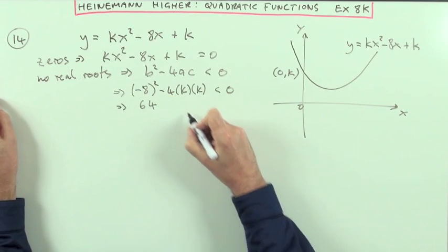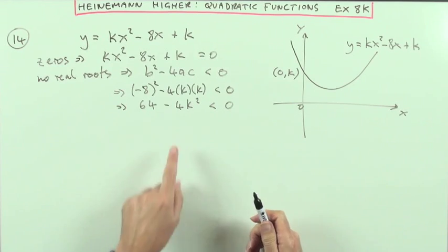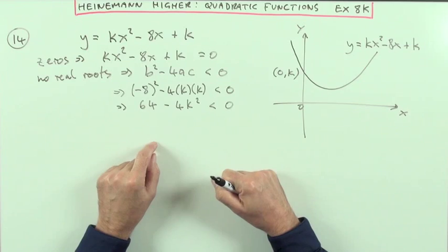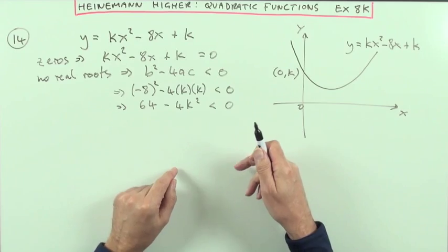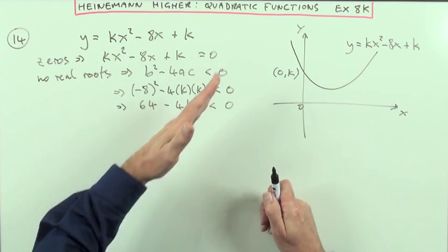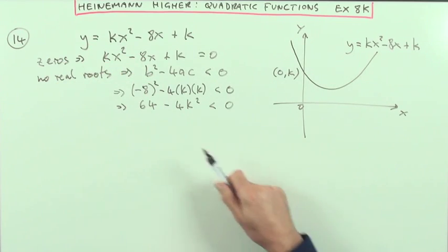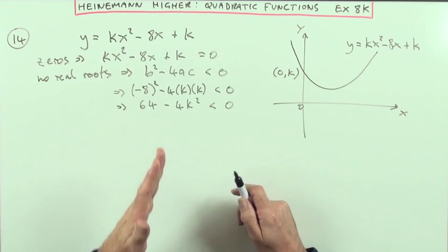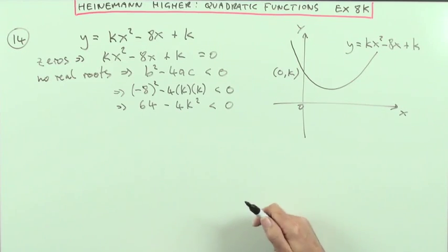So I've got 64 minus 4k squared is less than zero. Now, don't be tempted to swap sides there and treat it as if it was a linear equation. You can solve linear inequalities just the same way as ordinary equations. Because with linear equations, once they've gone positive, they'll always be positive. Or if they're going down, once they've switched and become negative, they're always negative. Not so with quadratics and higher powers. They can go up positive, but then they can take a wee turn on you and come back down and sneak down negative again.